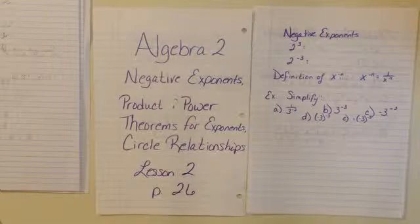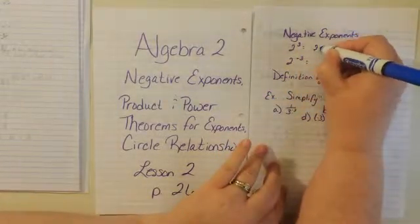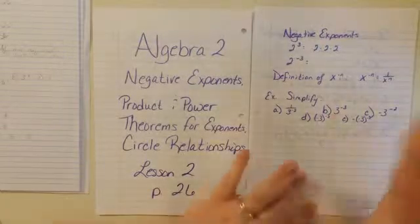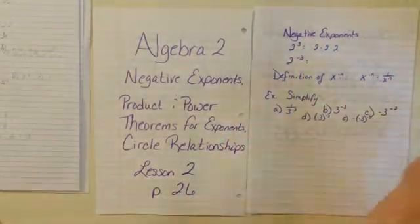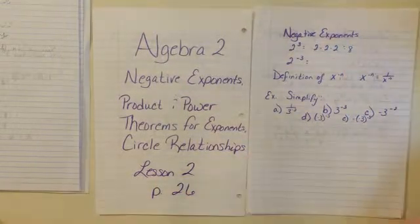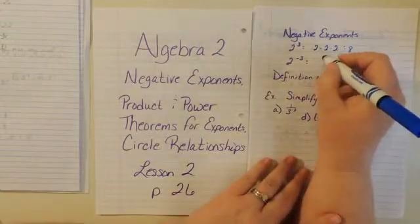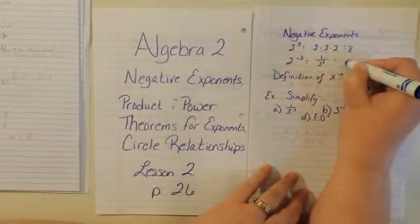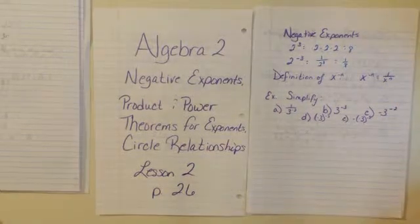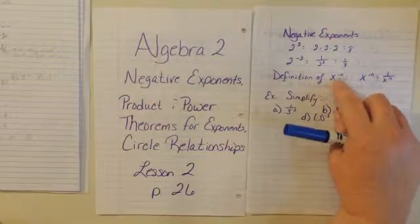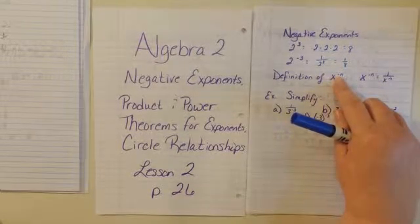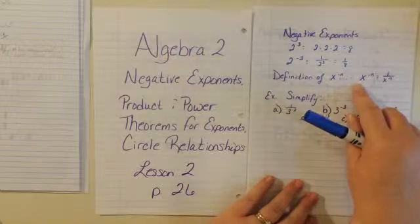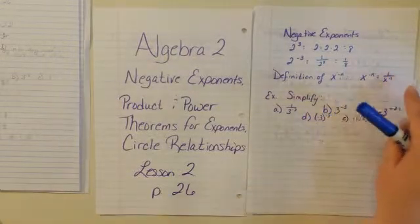Negative exponents. 2 cubed is defined as 2 times 2 times 2 — remember, that's a definition. Some mathematicians decided that 2 to the 3 is going to equal 2 times 2 times 2, which equals 8. 2 to the negative 3 is defined as 1 over 2 cubed, so this actually equals 1 eighth. The definition of x to the negative n, if n is any real number and x is any real number that is not 0, then x to the negative n equals 1 over x to the n.